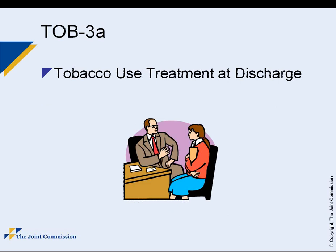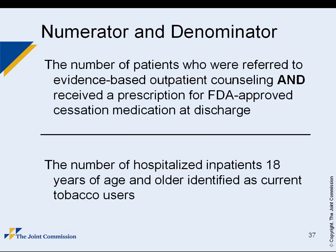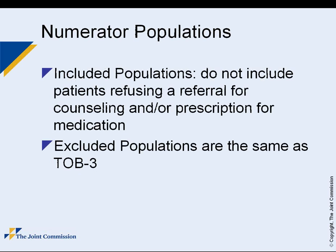There is also an alternate rate, Tobacco 3A, which is very similar to Tobacco-3 except the numerator includes only patients who actually took the referral and received the prescription — refusals are excluded. This gives the true rate of patients who actually received those interventions. Excluded populations are the same as Tobacco-3.